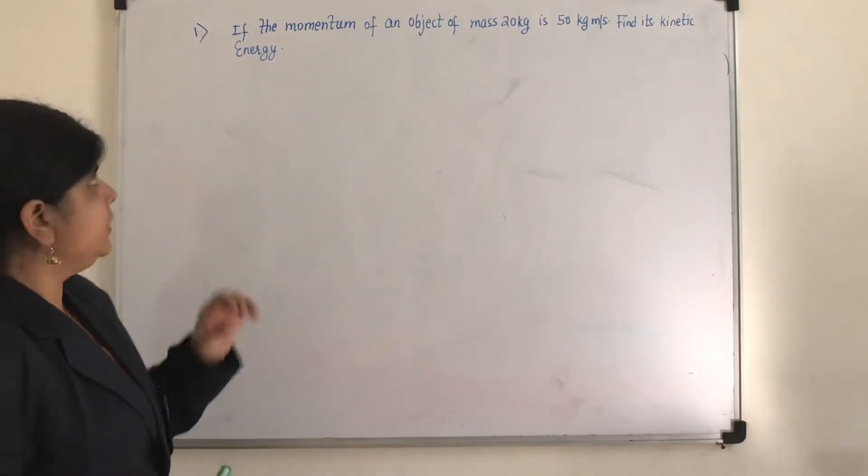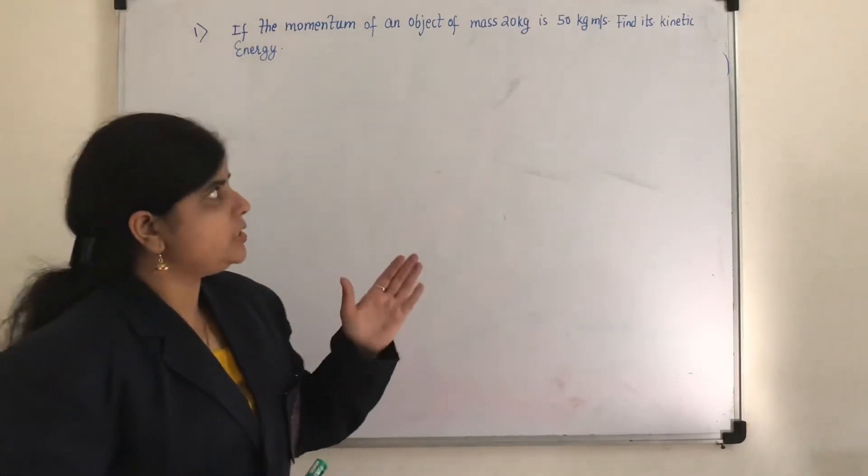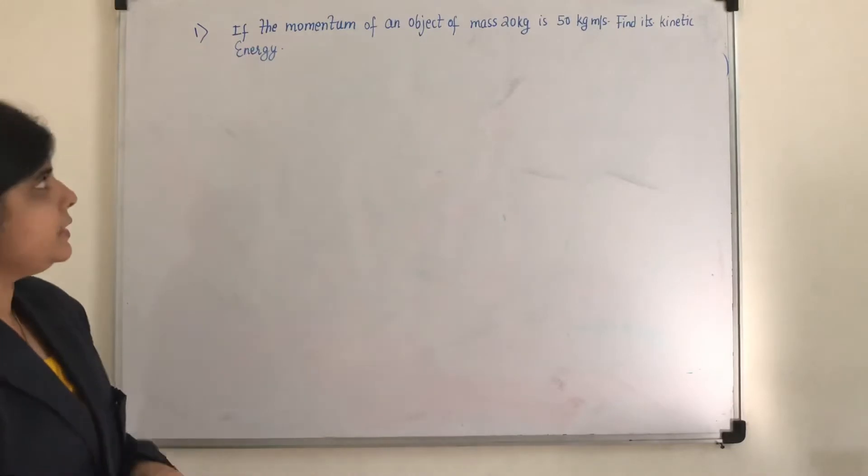So let us see the first one. If the momentum of an object of mass 20 kg is 50 kg meter per second, find its kinetic energy.